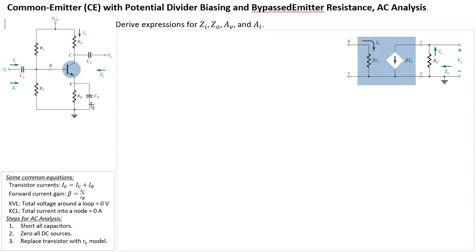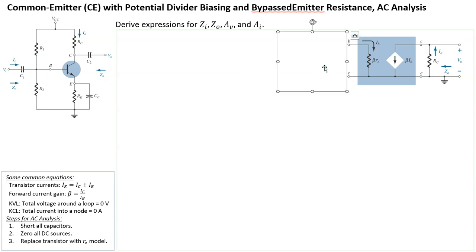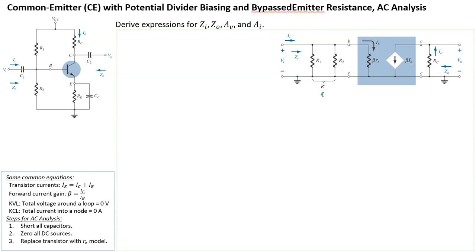C1, C2, and CE become short circuits in AC analysis. To recap the steps: short all capacitors, zero all DC sources, and replace the transistor with the re model. On the input side, the DC source is zeroed, so the top of R1 is now connected to ground. R2 is between base and ground, and since VCC is zero, R1 is also between base and ground — meaning R1 and R2 are now in parallel in the AC equivalent circuit, labeled R prime.